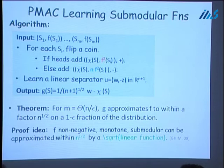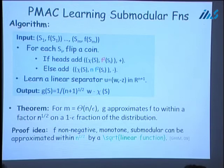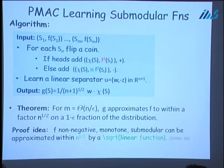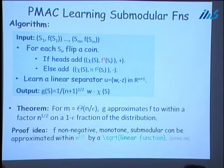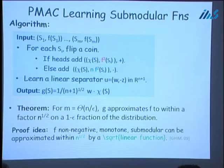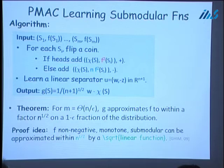For the sub-modular case, we use a stronger structural result due to Goemans et al. that says any non-negative monotone sub-modular function can be approximated to within √n by a √-linear function. Using this stronger structural result, we slightly modify the algorithm — replacing F with F² and outputting a slightly different function — but using similar ideas, we can show that if the number of examples is roughly n/ε, then with high probability the hypothesis G approximates the target within factor √n on a 1−ε fraction of examples from the same distribution.